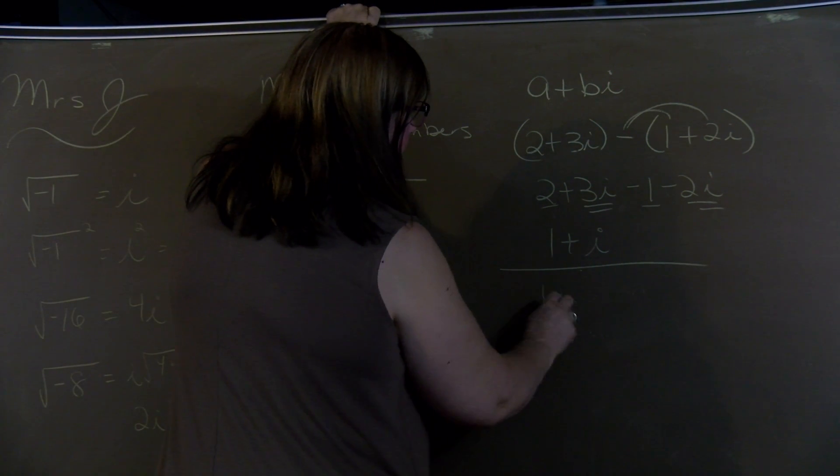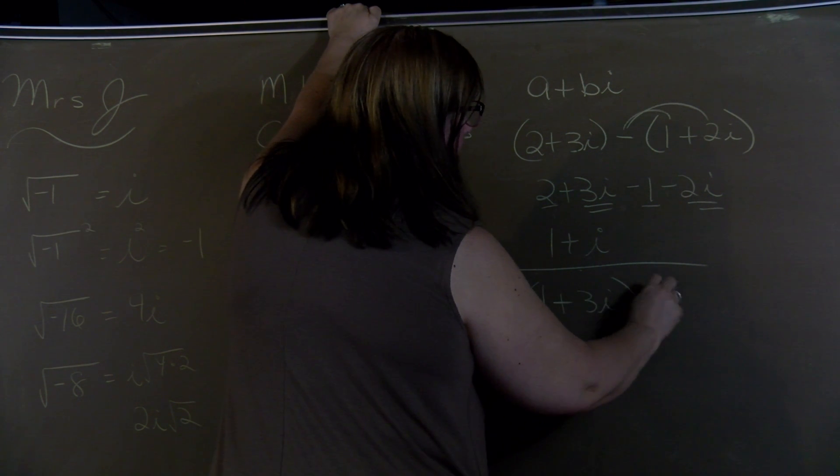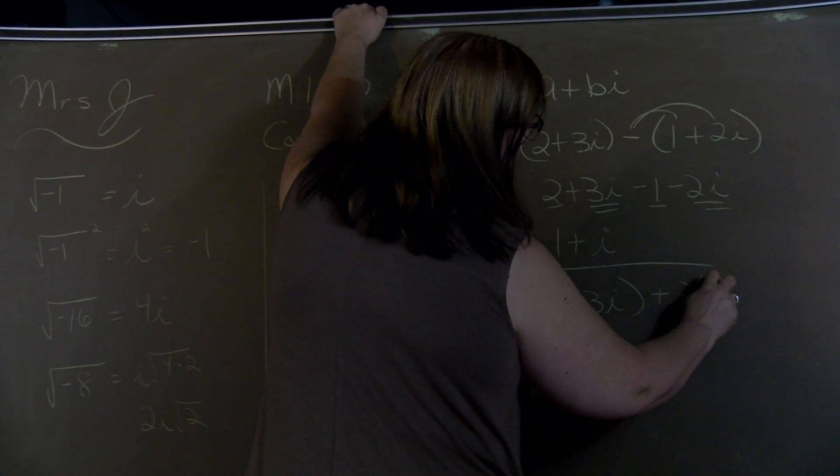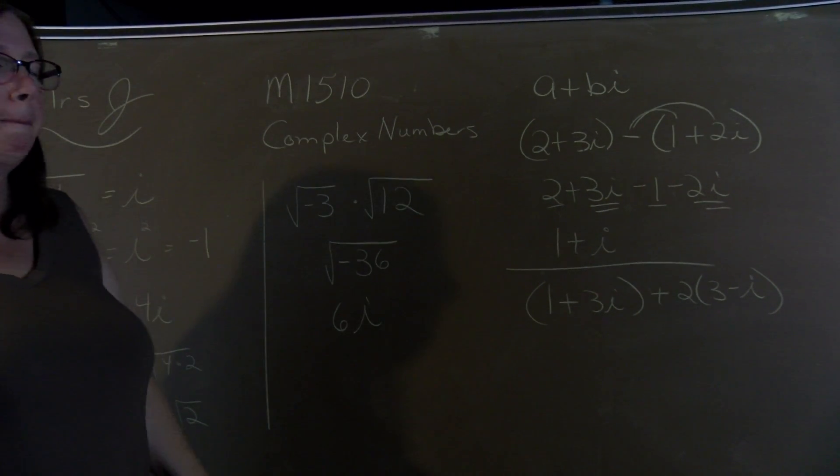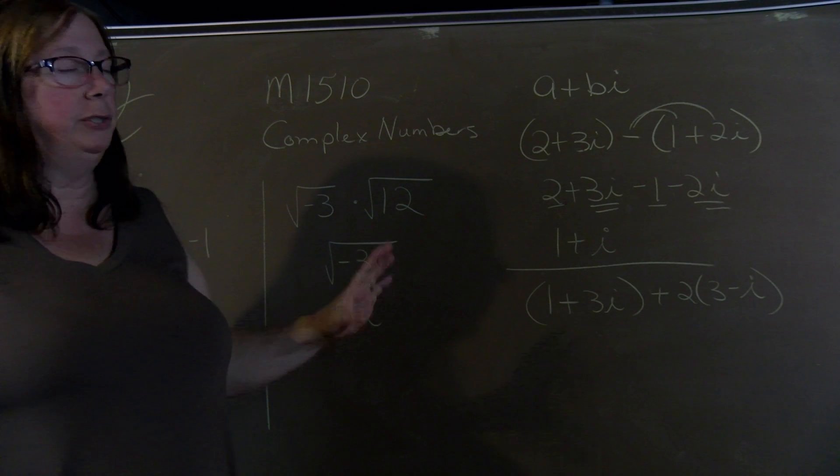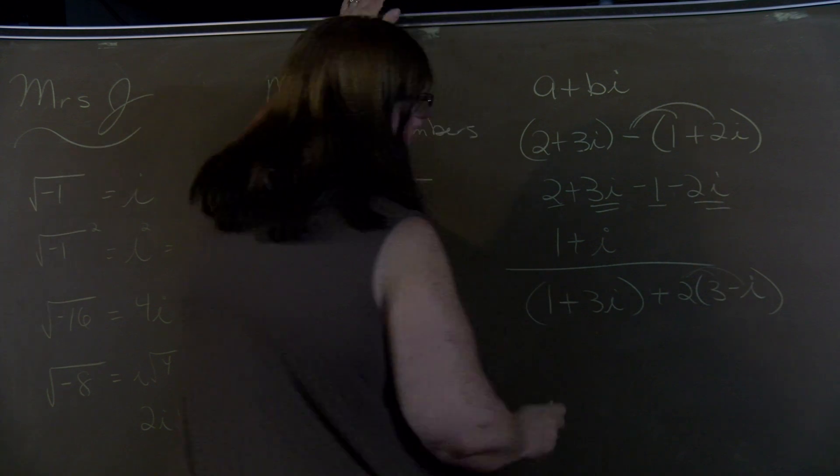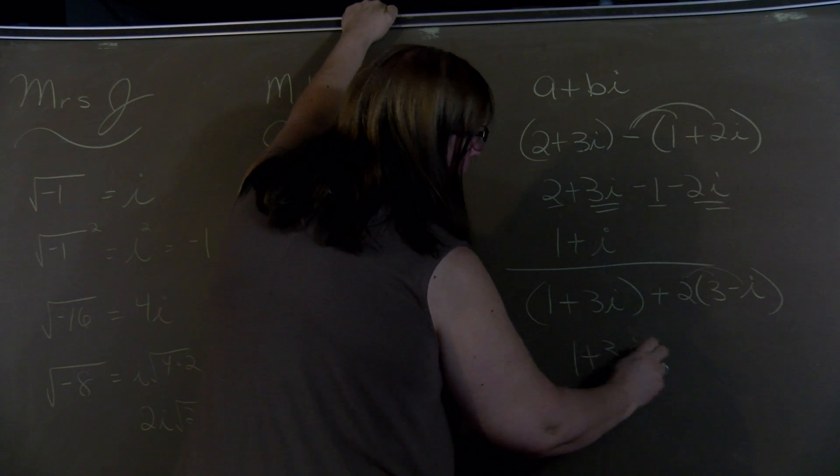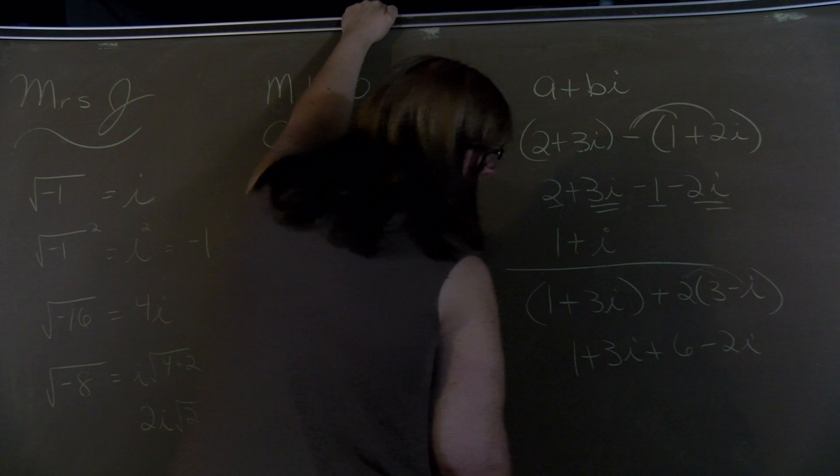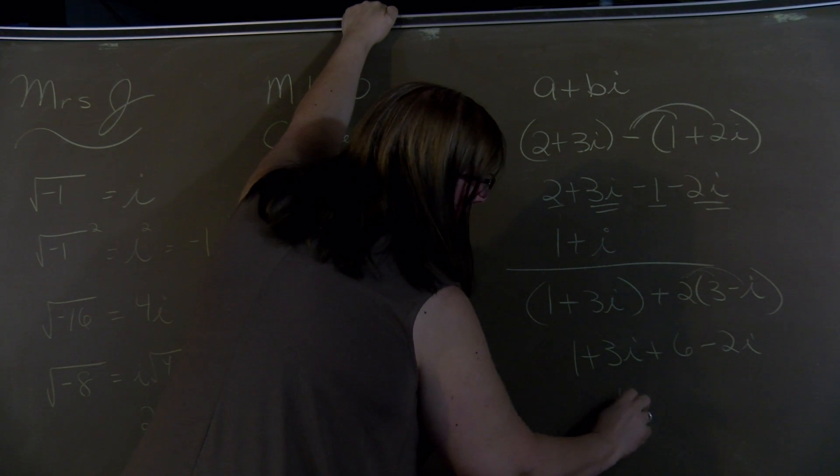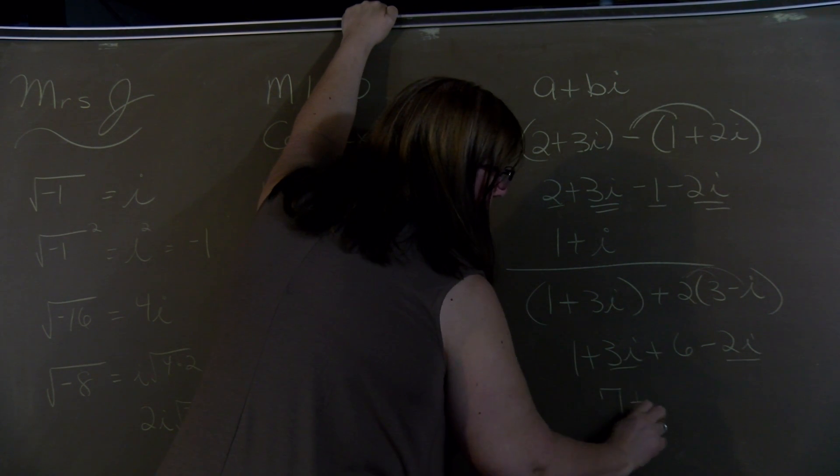So if we had, first we would distribute the 2. So you're simplifying, just like when you had variables. We would first distribute that 2. So 1 plus 3i plus 2 times 3 is 6 minus 2i. Combining like terms, 6 and 1 is 7. And then 3i minus 2i is a positive i.